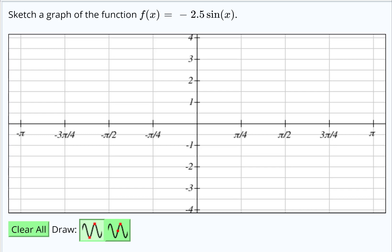I know that this is a sine x graph, but the negative in front will reflect it over the x-axis, and the 2.5 in front is the amplitude.